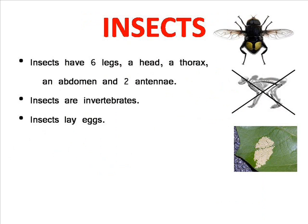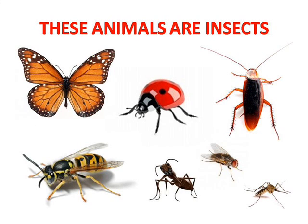Insects. Insects have six legs: a head, a thorax, an abdomen, and two antennae. Insects are invertebrates. Insects lay eggs. These animals are insects.